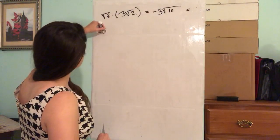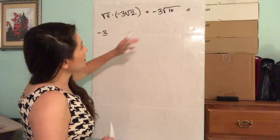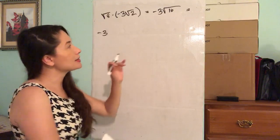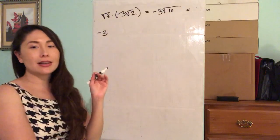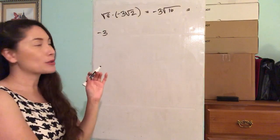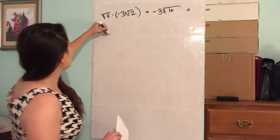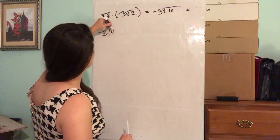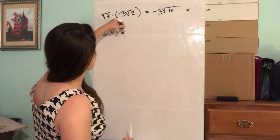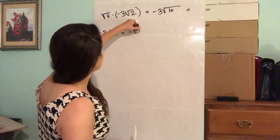The negative three — what is the square root of 16? Four, right? So this is going to be negative three times four, and that gives us negative 12.